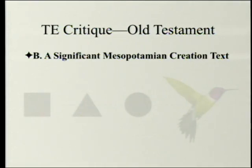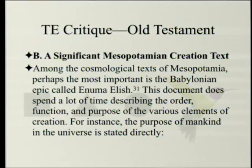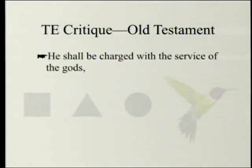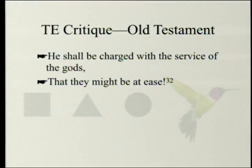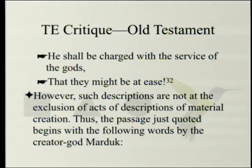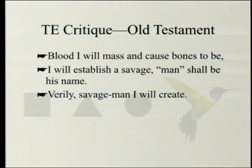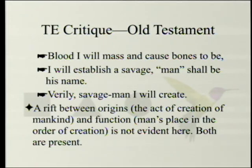A significant Mesopotamian creation text is the Babylonian epic called Enuma Elish. This document does spend a lot of time describing the order, function, and purpose of the various elements of creation. For instance, the purpose of mankind is stated directly: 'He shall be charged with the service of the gods that they might be at ease.' However, such descriptions are not at the exclusion of material creation. The passage just quoted begins with these words by the creator god Marduk: 'Blood will amass and cause bones to be. I will establish a savage. Man shall be his name. Verily, savage man, I will create.' A rift between origins and function is not evident here — both are present.